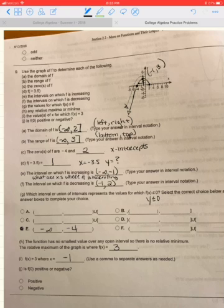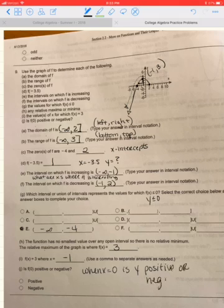Is F of 0 positive or negative? So it's saying when x equals 0 is y positive or negative. When x is 0, is y positive or negative? It's positive.